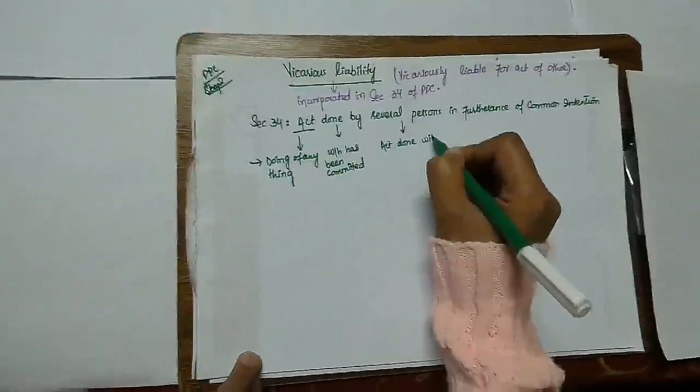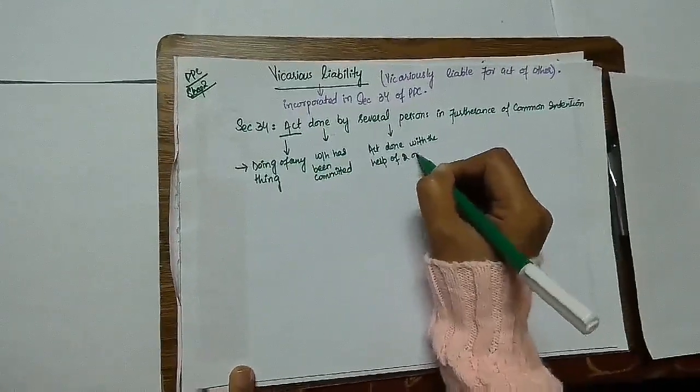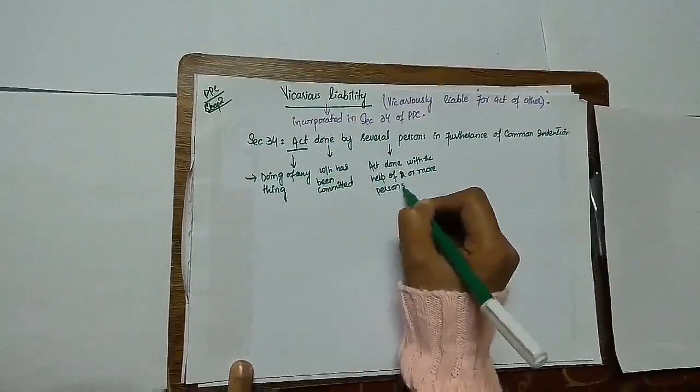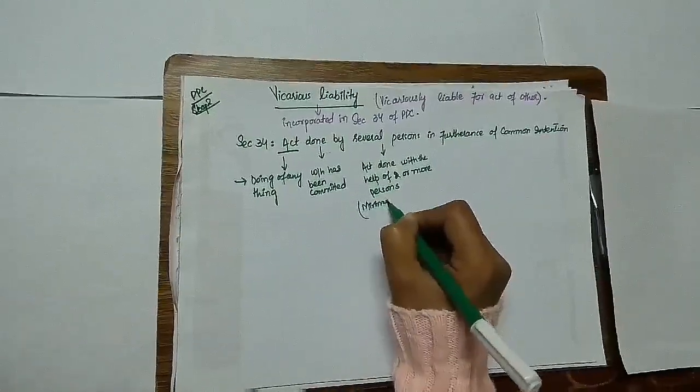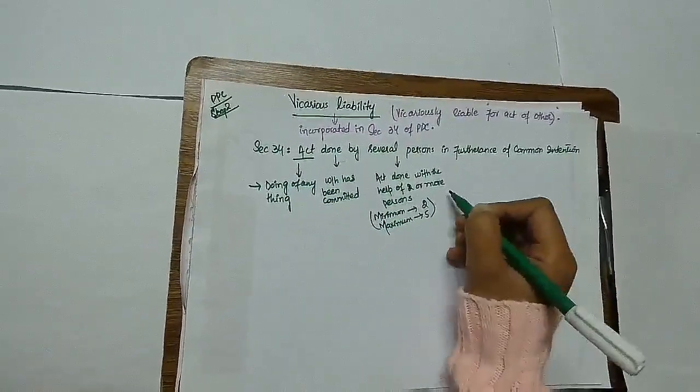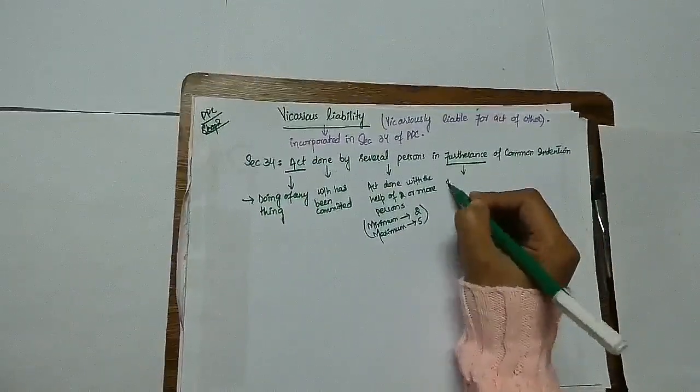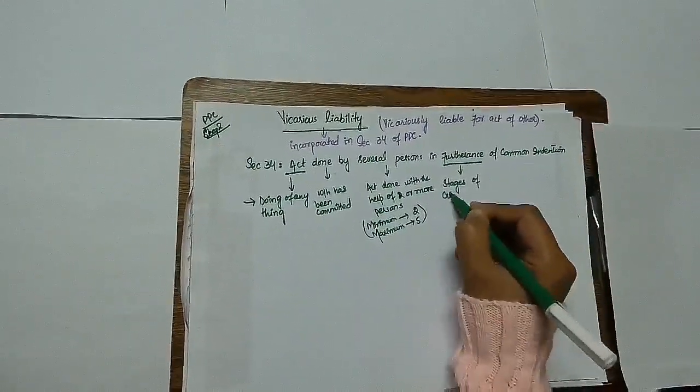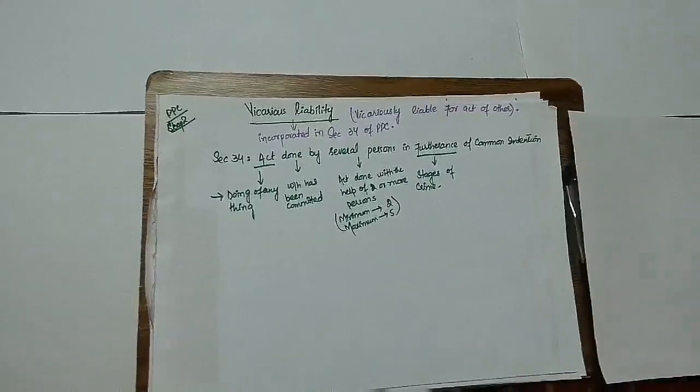Several persons means act done with the help of one or more person. One of the people have done some work with others. Minimum limit is two, between two persons or among two or more persons.